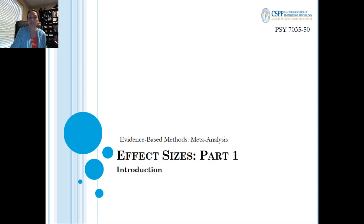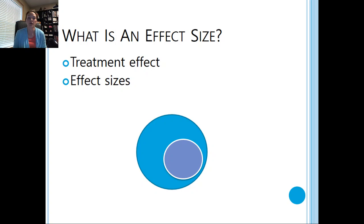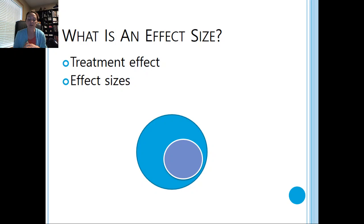So what exactly is an effect size? We're talking about two different terms used in different ways by different people: treatment effects and effect sizes. In the field of medicine, meta-analyses often refer to the effect size as a treatment effect, using effect sizes like odds ratios, risk ratios, or risk differences. In the social sciences, meta-analyses refer to it as an effect size, commonly using standardized mean differences or correlations.